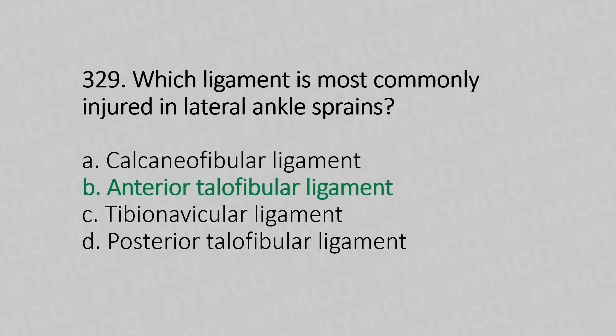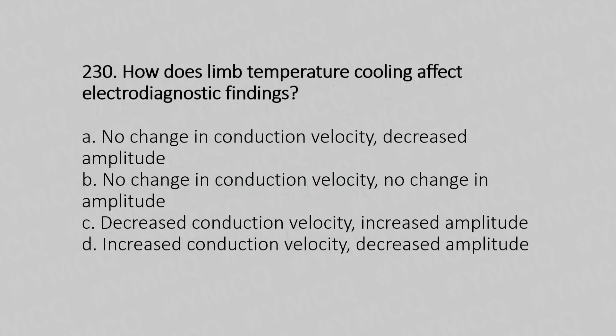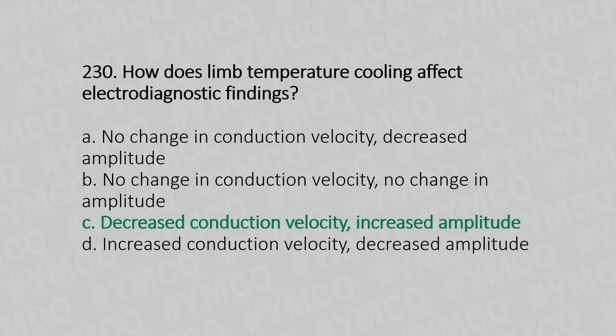Question number 330: How does limb temporal cooling affect electrodiagnostic findings? Option A: no change in conduction velocity, decreased amplitude. Option B: no change in conduction velocity, no change in amplitude. Option C: decreased conduction velocity, increased amplitude. Option D: increased conduction velocity, decreased amplitude. The answer is option C.